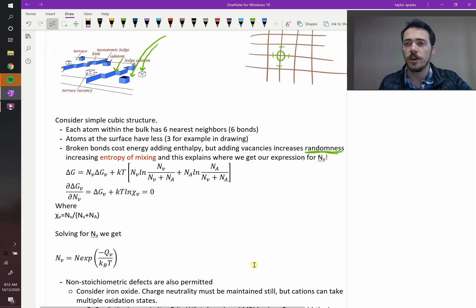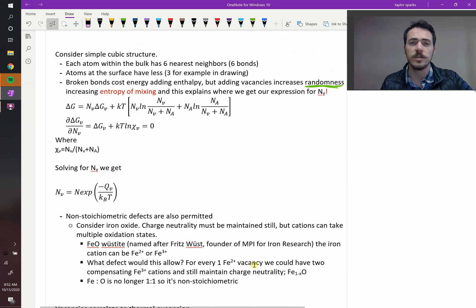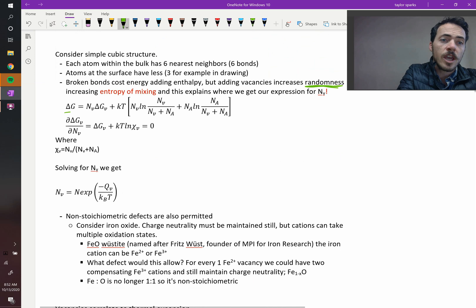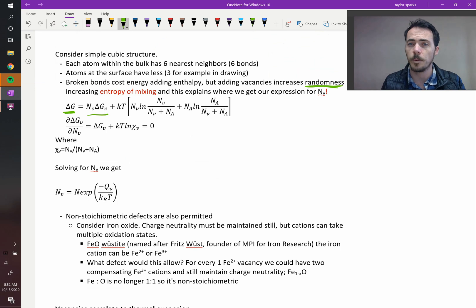So this leads us to modifying our expression for the free energy of this system. The change in the Gibbs free energy is now going to be equal to the concentration of your vacancies multiplied by whatever the change in Gibbs free energy for forming a vacancy is. And then we're going to add to that another term, this whole big term over here, which is called the entropy of mixing.